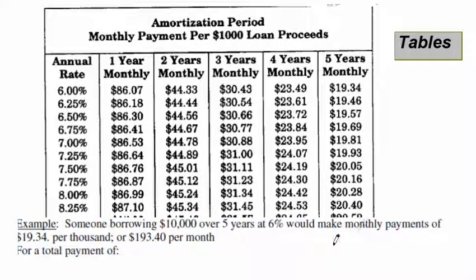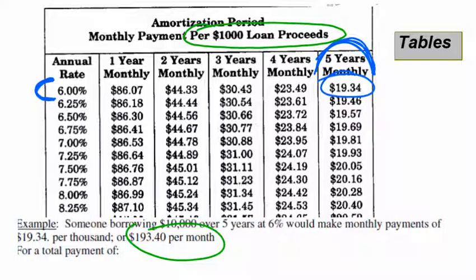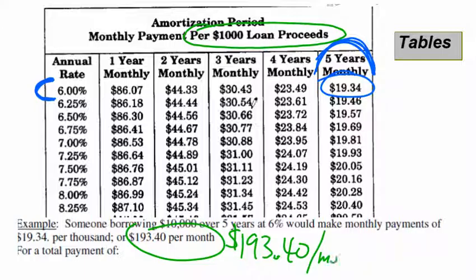For example: someone borrowing ten thousand dollars for five years at six percent pays nineteen dollars and thirty-four cents a month per thousand. Since they borrowed ten thousand dollars, they multiply by ten: that's one hundred ninety-three forty per month. They'll make five years of payments, which is sixty payments total.